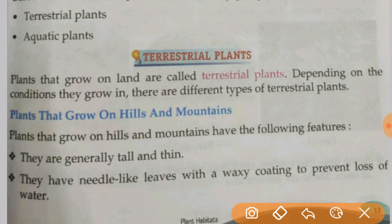Depending on the conditions they grow in, there are different types of terrestrial plants — plants that grow in the desert, and plants that grow on hills and mountains. First, let's look at plants that grow on hills and mountains.